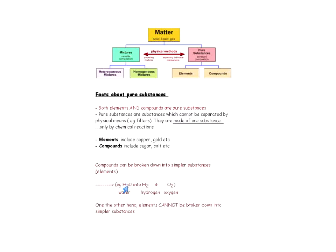A compound can be broken down into simpler substances — that's part of its definition. A compound is made up of more than one element and can be broken down into those simpler elements. Water is an example of a compound, and it can be broken down into the elements hydrogen and oxygen. On the other hand, elements cannot be broken down into simpler substances.